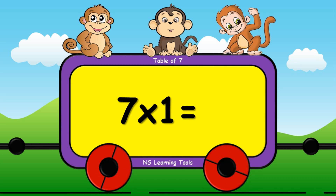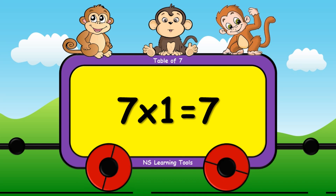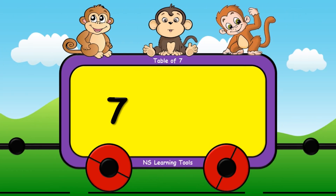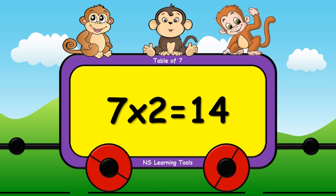Seven ones are seven. Seven twos are fourteen.